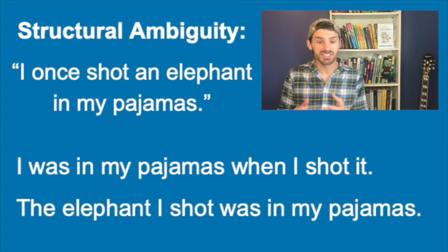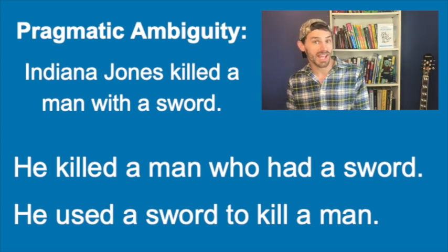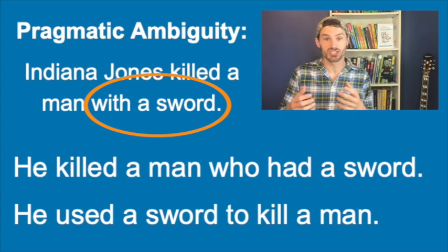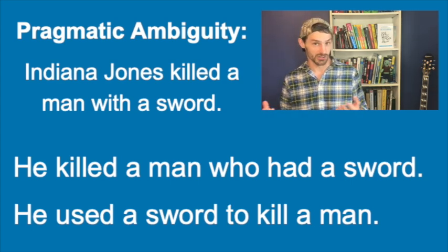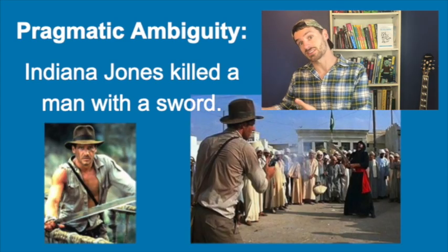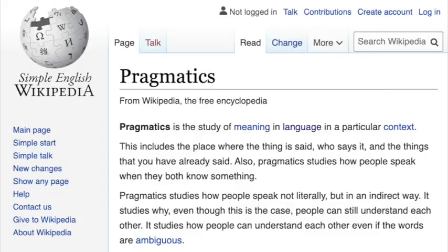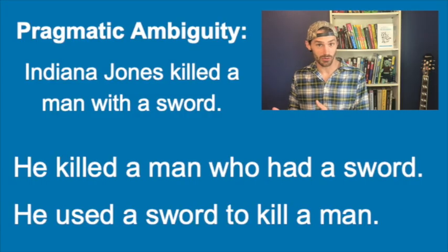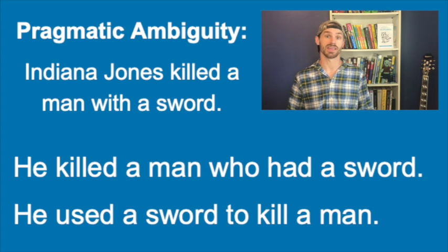Now let's contrast that with a very similar structural ambiguity, like in the sentence "Indiana Jones killed a man with a sword." We don't know where to attach the prepositional phrase "with a sword," so this sentence is just as ambiguous as the last one. But it's more likely to be confusing because we can't rely on extra-linguistic information — there's nothing about the nature of Indiana Jones that tells us whether he's more likely to use a sword or to kill a man who has a sword. So while this is another example of structural ambiguity, it's also what we call pragmatic ambiguity. Pragmatics is a subfield of linguistics that studies how context contributes to meaning.